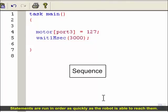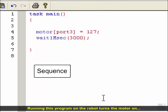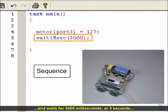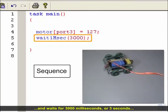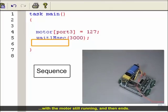Statements are run in order as quickly as the robot is able to reach them. Running this program on the robot turns the motor on, then waits for 3000 milliseconds, 3 seconds, with the motor still running, and then ends.